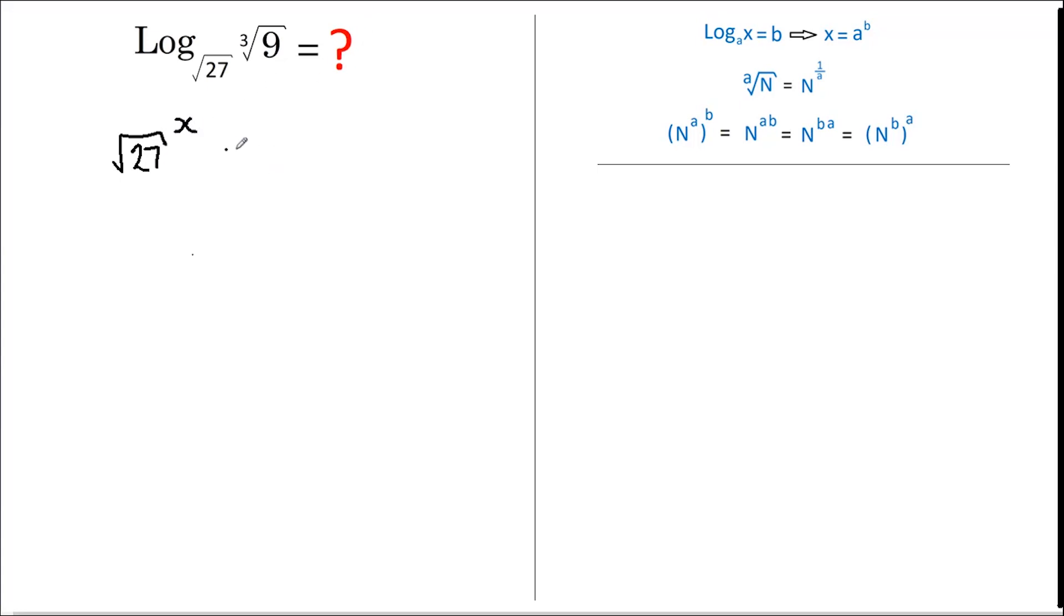Now let's get rid of these square root and cube root signs and rewrite this as 27 to the power of a half, as per this rule here, and that's all raised to the power of X.